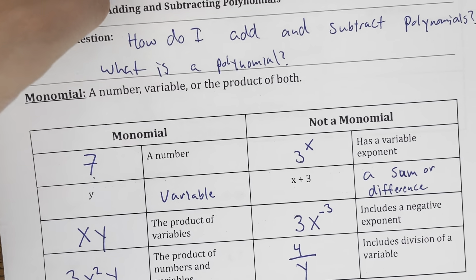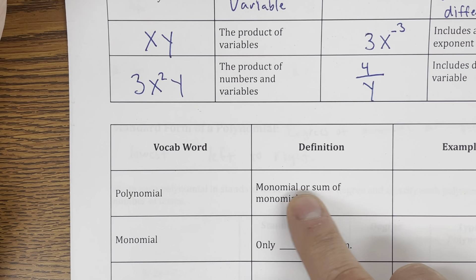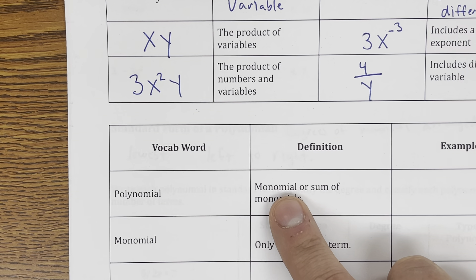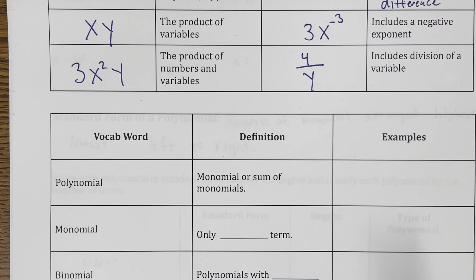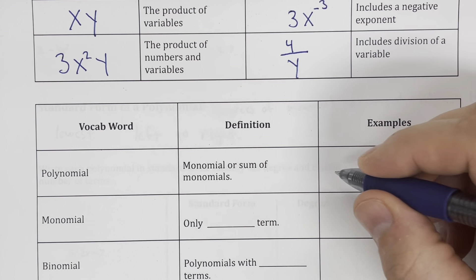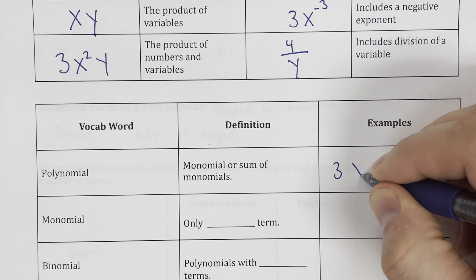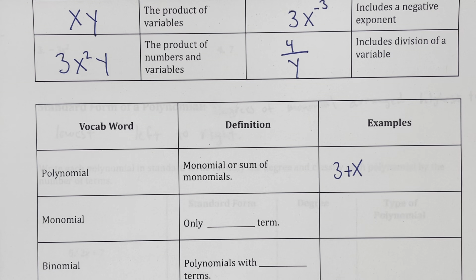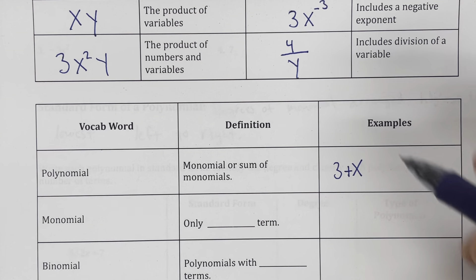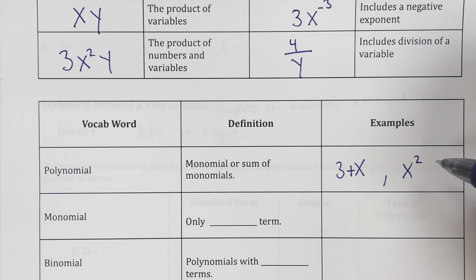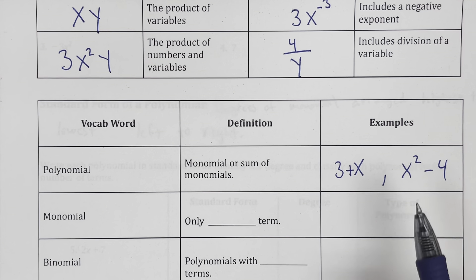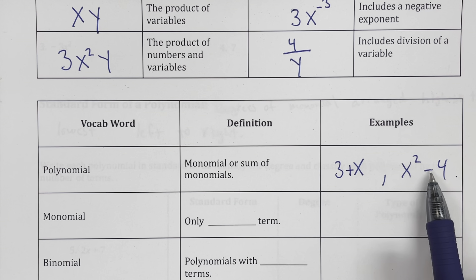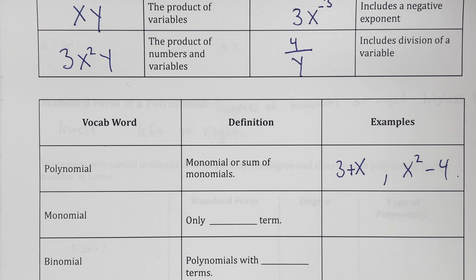A polynomial is a monomial or the sum of monomials. A polynomial could be a monomial — just one term — but typically we'll see it as more than one term. So something like 3 plus x is a polynomial because there are two terms. Another example is x squared minus 4 — that is a polynomial with two terms. Each part is a monomial, and they're separated by a plus or minus sign.